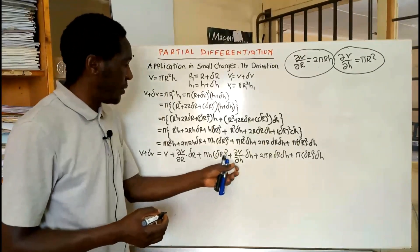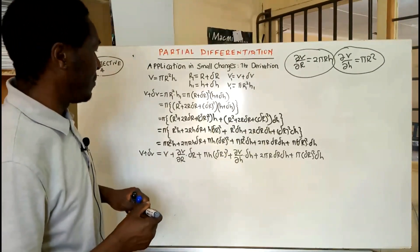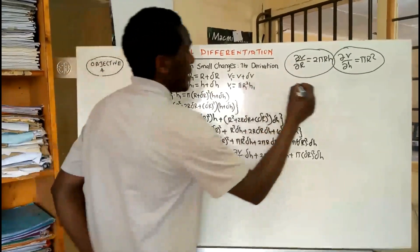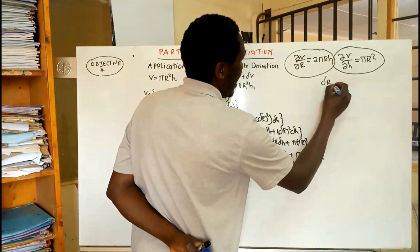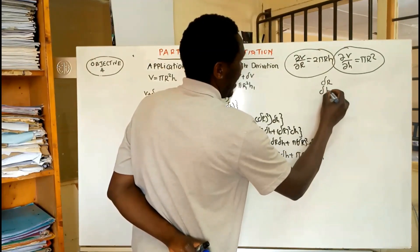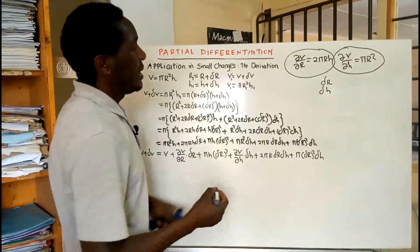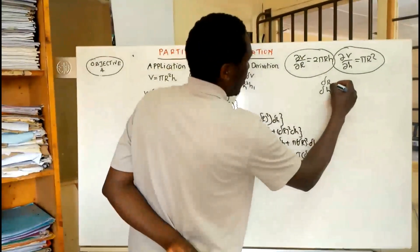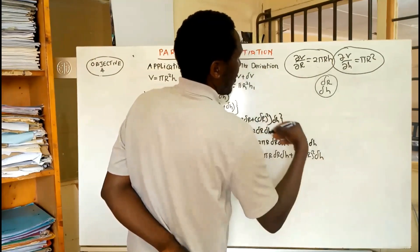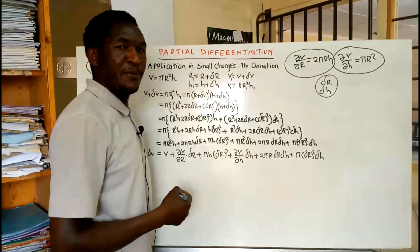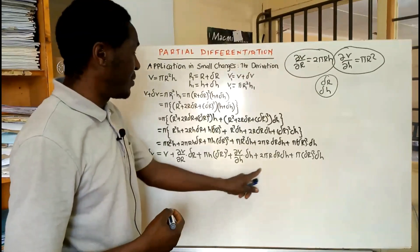There is something really important to note here: these changes are very small. The change in R and the change in H are very small changes, so terms like delta R squared are tending to zero. Where we have a product of two small changes, that result is going to be much, much smaller and can be treated as negligible.